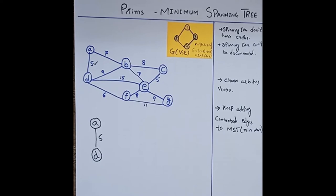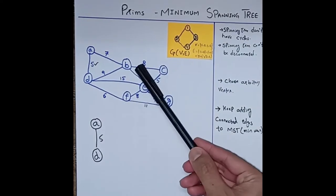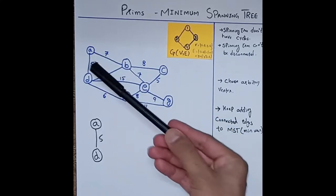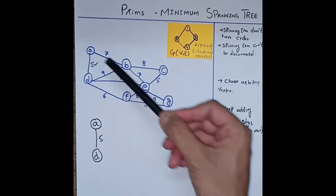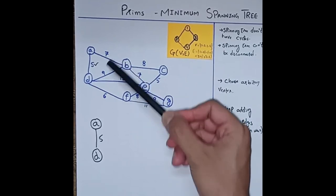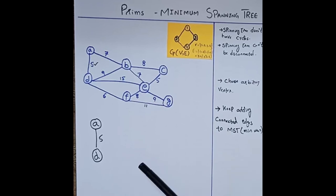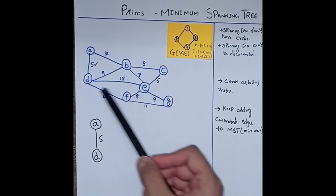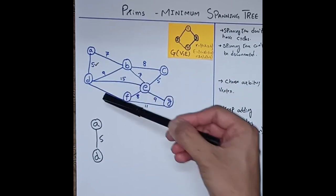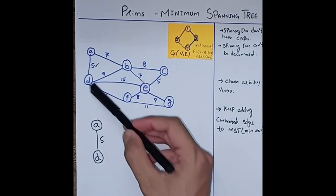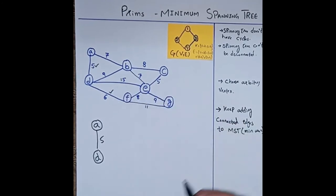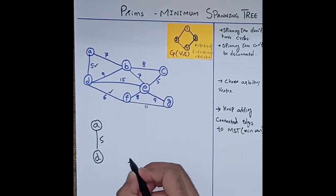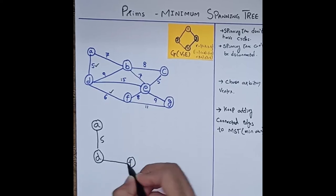Now we have two vertices. From these two vertices we consider the minimum possible path based on weight. A is connected to B with weight 7, and D is already selected. D is connected to B with weight 9, to E with weight 15, and to F with weight 6. Out of 7, 9, 15, and 6, the minimum is 6. So we choose the path D to F with weight 6.